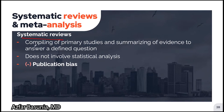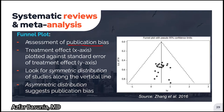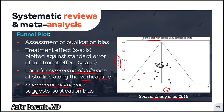Systematic reviews involve compiling primary studies and summarizing evidence to answer a defined question. Unlike meta-analysis, systematic reviews often do not involve statistical analysis. Like meta-analysis, publication bias is a major drawback. Publication bias can be assessed graphically using a funnel plot. The treatment effect, in this case the odds ratio, is plotted on the x-axis, while the standard error of the treatment effect is plotted on the y-axis. Each dot represents a study. We look for symmetric distribution of the studies along the vertical line — asymmetric distribution suggests publication bias.